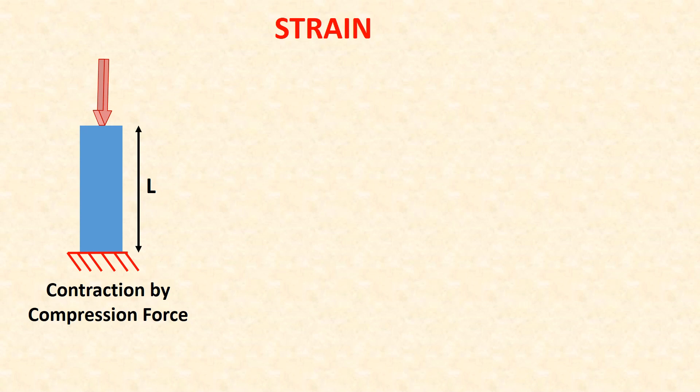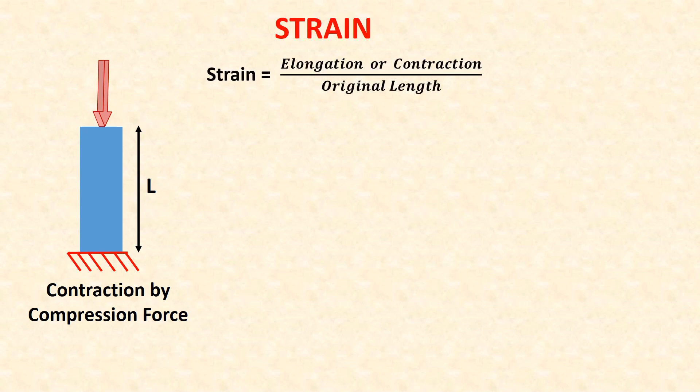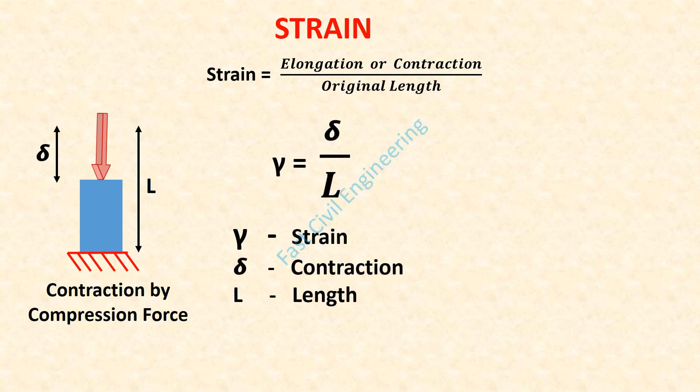For strain by compressive force, the formula is the same: gamma is equal to delta over L, but here delta represents contraction, not elongation.